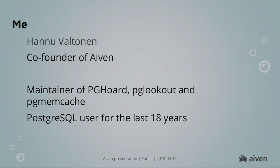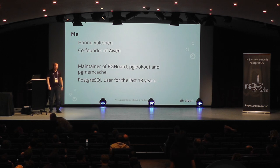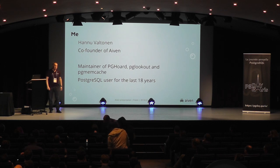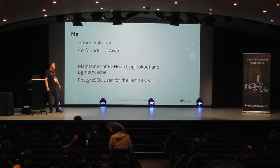A word about me: I'm a co-founder of Aiven, which is a database as a service company. We basically serve five different public clouds and support seven different regions, and have different databases that we support, Postgres being one of them. On the Postgres side, I'm also the main maintainer of a couple of Postgres-related open source projects — pgHoard, which is a backup daemon that's fairly commonly used, pglookout, which does HA things, and pgmemcache. I've been using Postgres for quite a long time.